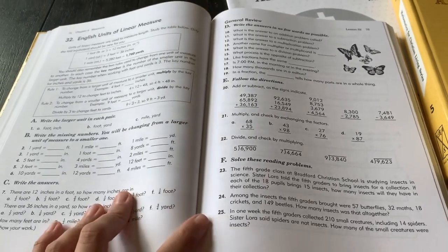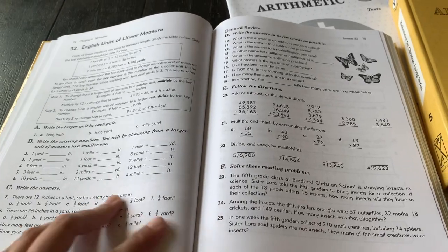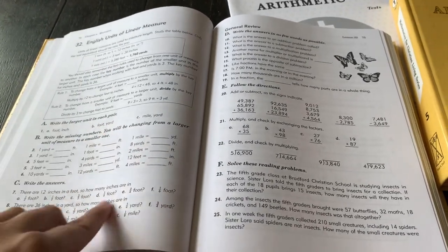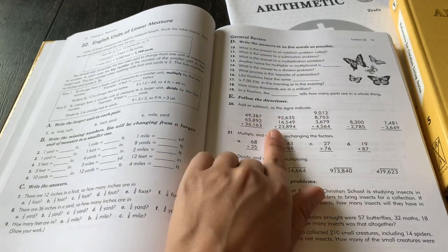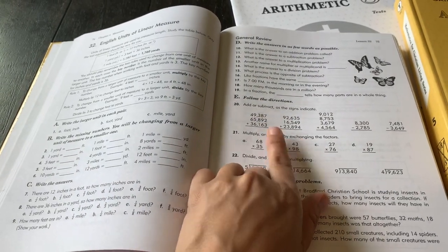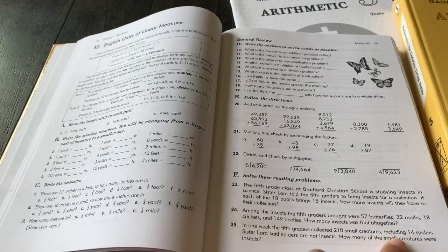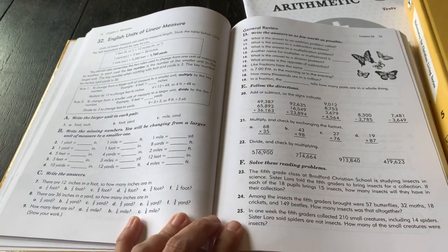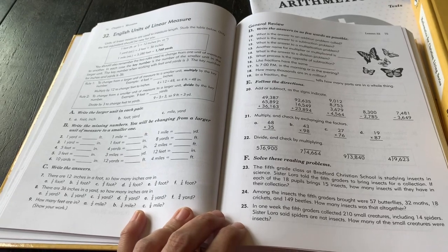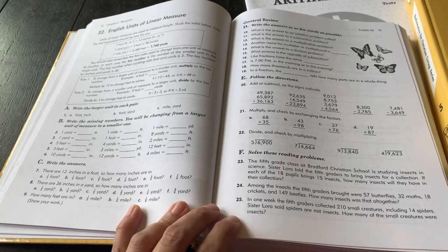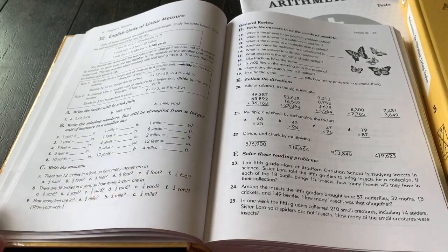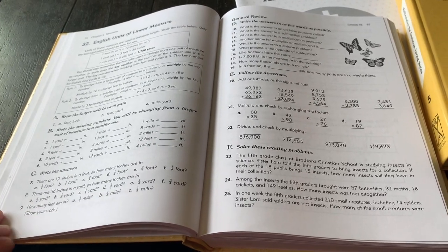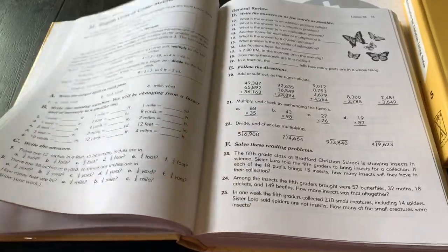So usually if I know that she has a concept, we may only do the odd problems or the even problems. If I know that she understands some of the review problems, we may just do one or two. It just depends on what's being taught and the lesson for that day. But you can absolutely make it your own. We usually do not do all of the problems listed just because of time sake.